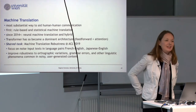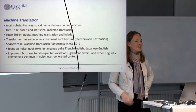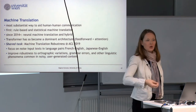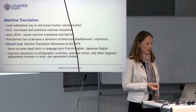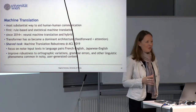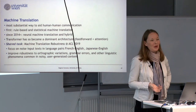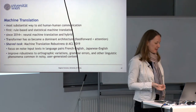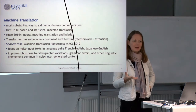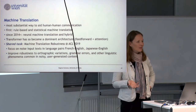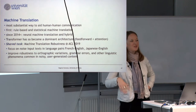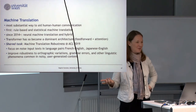Machine translation is the most important way machines can help human-to-human communication. There used to be rule-based and statistical methods that worked to some extent, but deep learning worked so much better. One important architecture — if you know about deep learning — transformers are the things being used right now for machine translation.